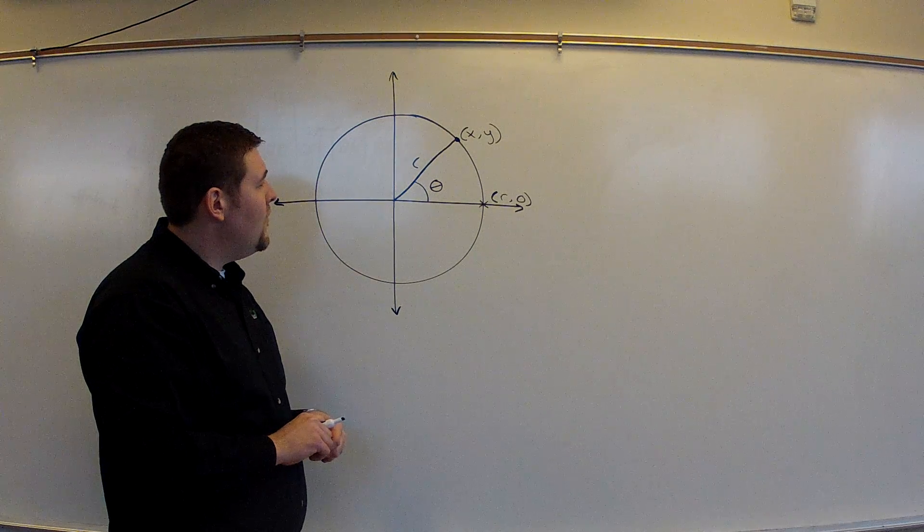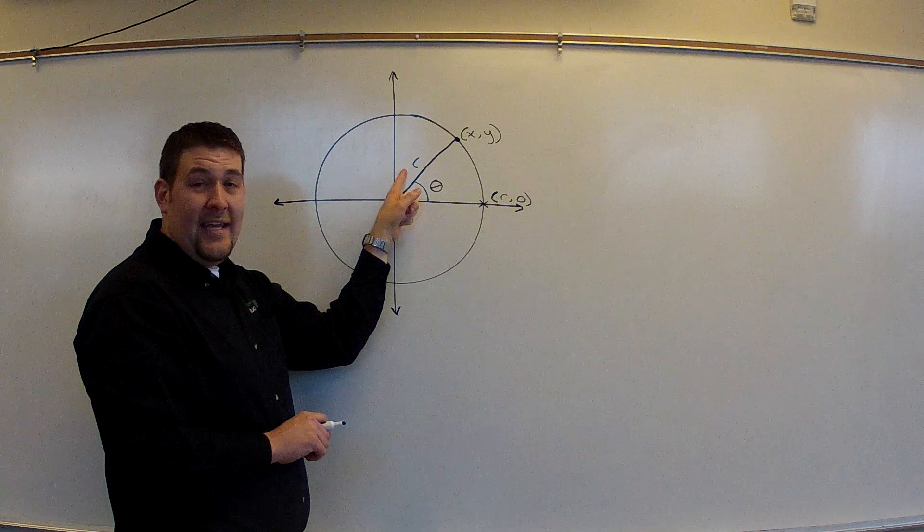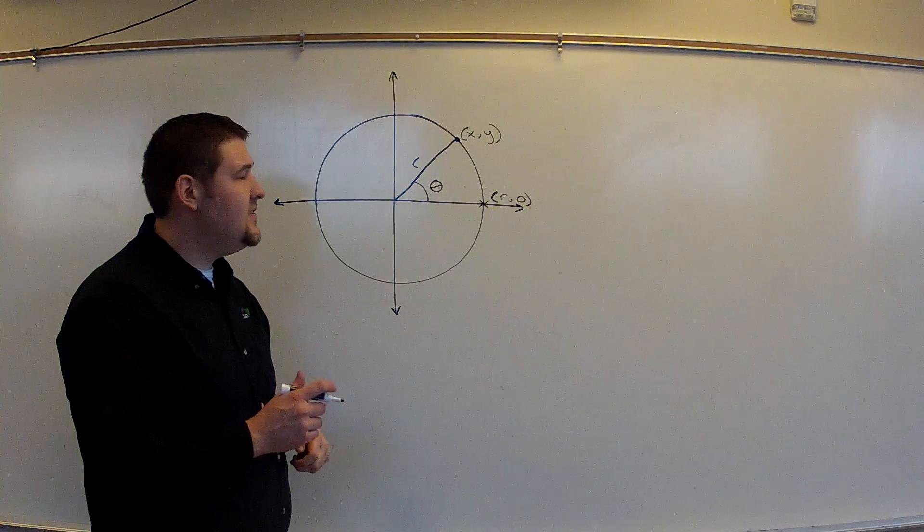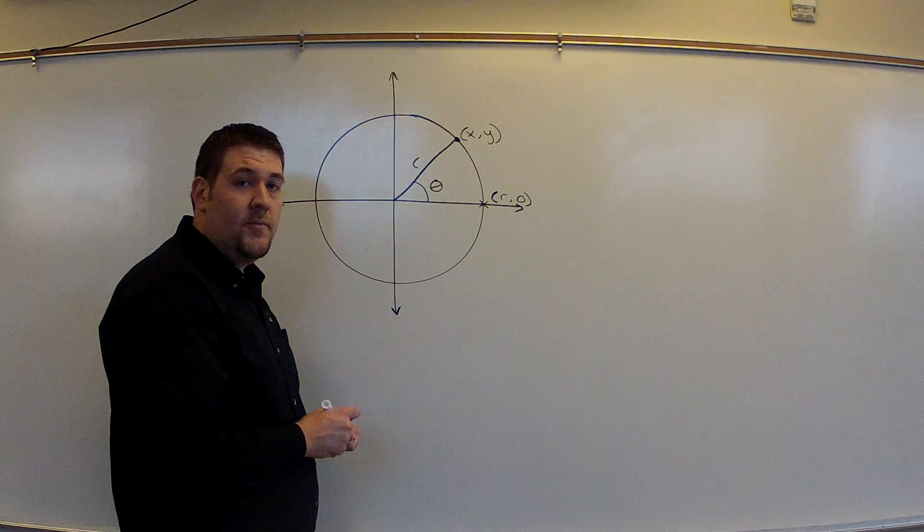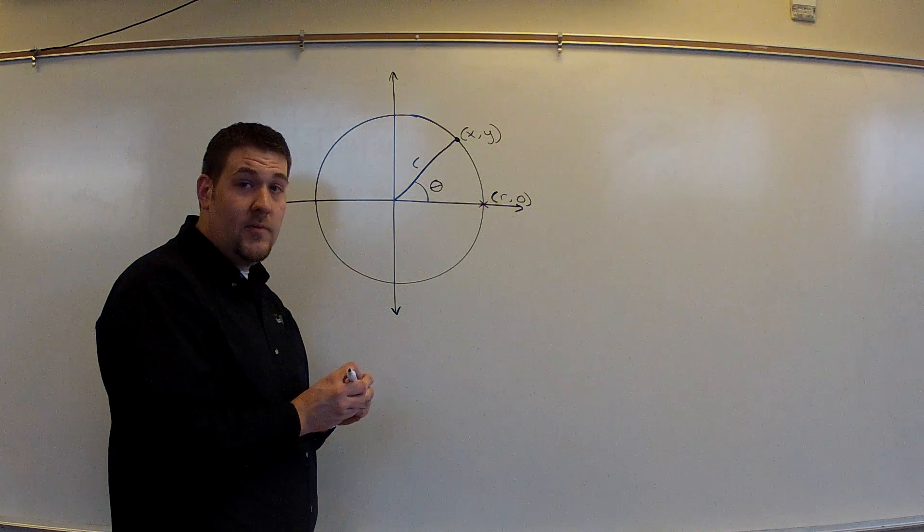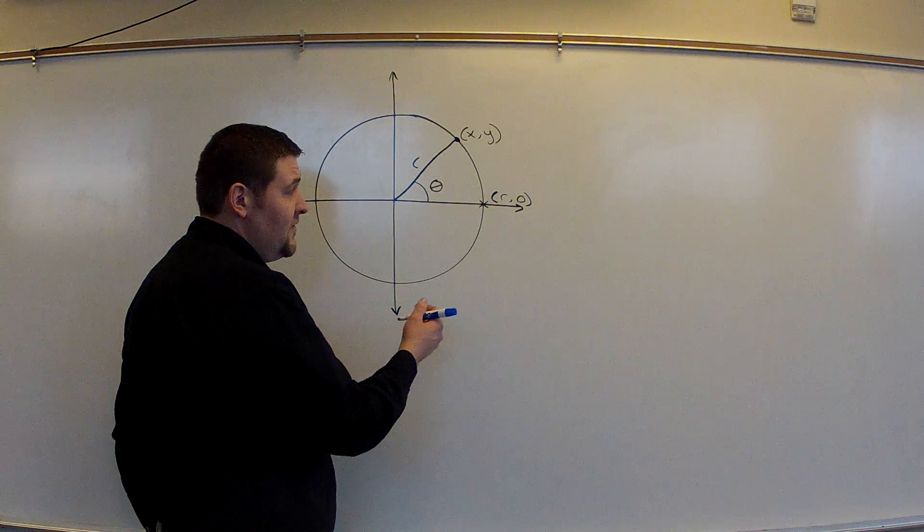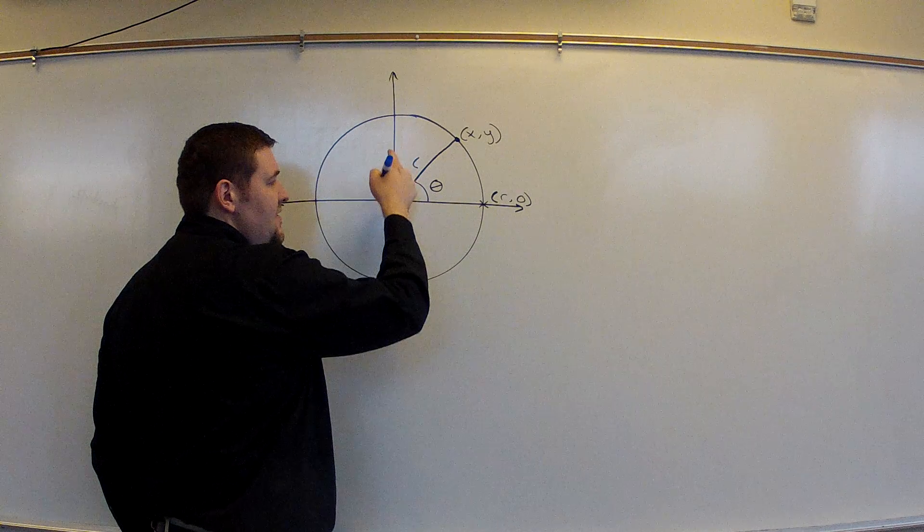So what I want to then consider is how does this theta and this radius turn into the position for x and y? Well, let's do two things. Let's go ahead and add a component. Now a component in this case is a vector component. We're talking about horizontal and vertical. Or in terms of the coordinate, the horizontal piece is on the x-axis and the vertical piece is on the y-axis.